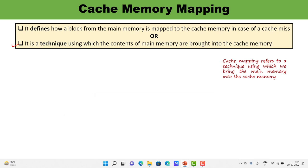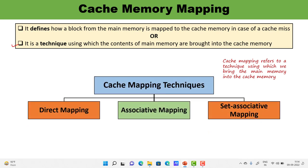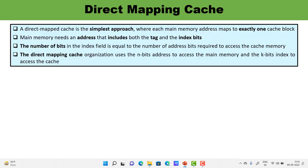There are three cache memory mapping techniques: direct mapping, associative mapping, and set associative mapping. In this video I will be talking about direct mapping. Direct mapping is the easiest and simplest approach, because one memory address is mapped exactly to one cache block. It is not the case that one memory address can be mapped to multiple blocks — one memory address is mapped to exactly one cache block only.